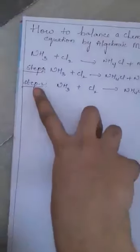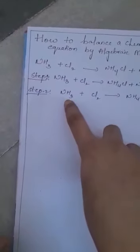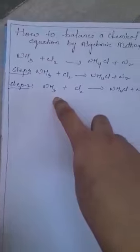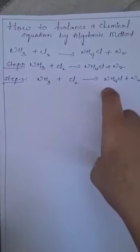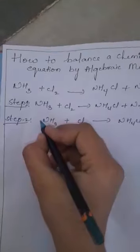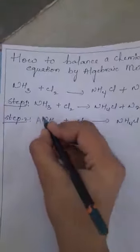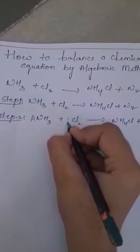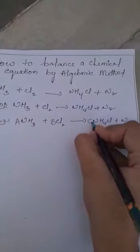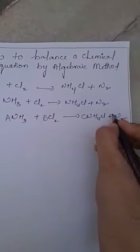In Step 2, we need to add coefficients in front of the elements on the reactants and product side — that is A, B, C, and D.